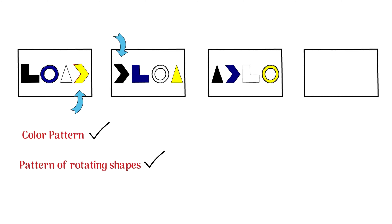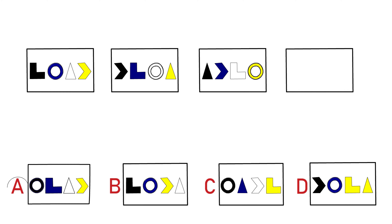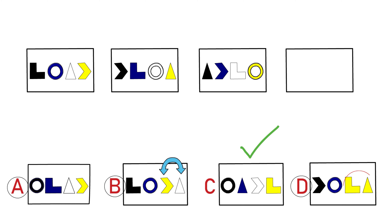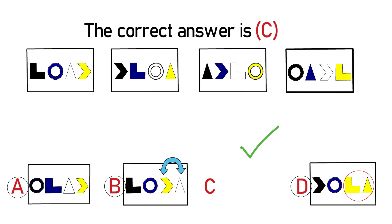If you can identify at least one of these patterns you will be able to solve this problem. Choice A does match the color pattern, but the next shape after the circle should be a triangle and not the L-shape as presented. Choice B can be excluded because the yellow shape and white shape should be swapped to match the color pattern. Choice C is the correct answer — it meets requirements for both patterns. Choice D does not match the color pattern as the two rightmost shapes are yellow.